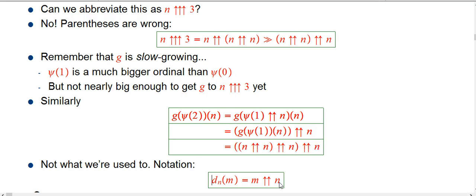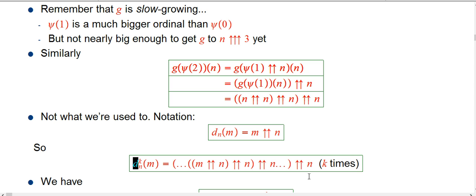Let me introduce a notation here. I'm going to say d for double-up: d sub n of m is what happens if you take m and double-up it by n. I'm really just reshuffling how the m's and n's work, putting it into a form where I can easily use functional powers. d sub n to the k is the usual notion of a functional power — take m, double-up it by n, then double-up it by n again, and again, k times. This is very different from a triple-up, and it's much, much, much weaker.